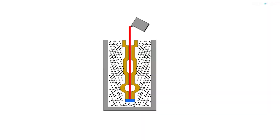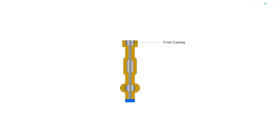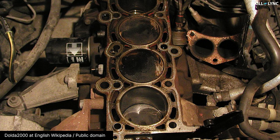After the two halves of the mold are assembled, the molten metal is poured into the mold cavity. This molten metal is then allowed to cool down and solidify inside the mold cavity. As the molten metal solidifies, it takes the shape of the required casting. After the molten metal has cooled down, the mold is broken and the final casting is obtained. This is how various components like crankshafts and other automotive components are manufactured using shell molding.